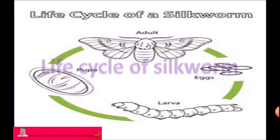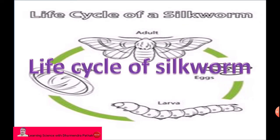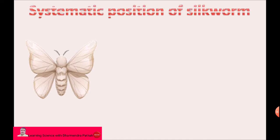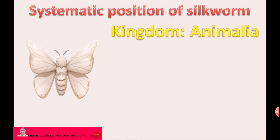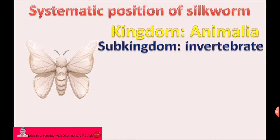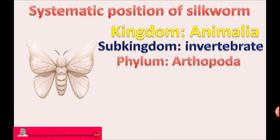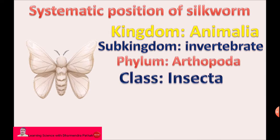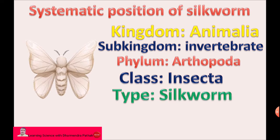Life cycle of silkworm. The systematic position of silkworm is: kingdom Animalia, sub-kingdom Invertebrate, phylum Arthropoda, class Insecta. The type example is the silkworm.